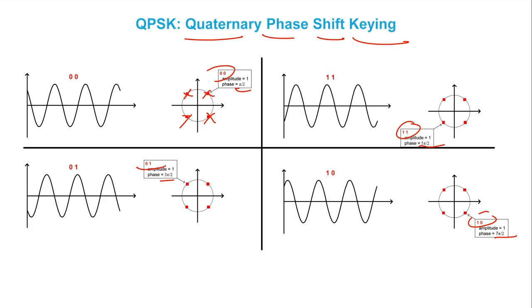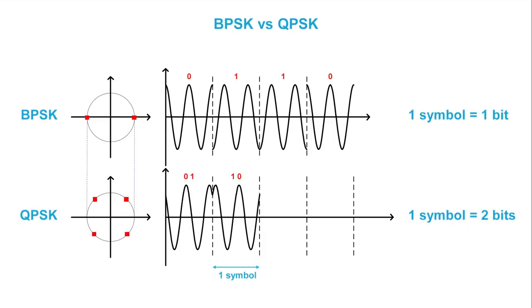This notion is important. That's why we gave it a name. We call a symbol the period of time during which the information transmitted remains constant. As you can see, in QPSK, we can transmit two bits per symbol. Whereas in BPSK, we only transmit a single bit per symbol. So QPSK can transmit twice as much information as BPSK.